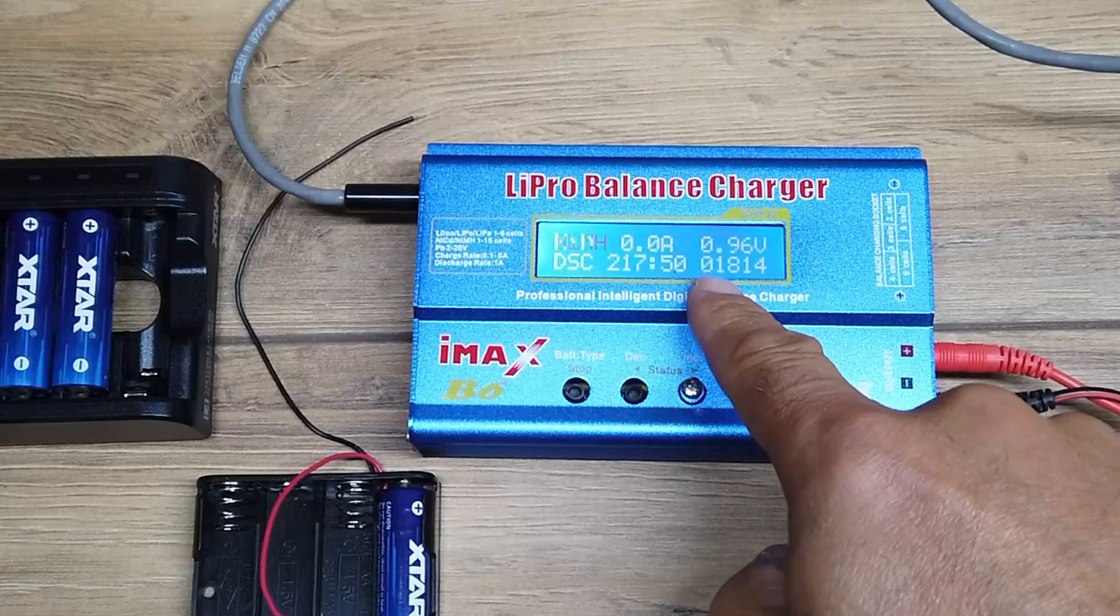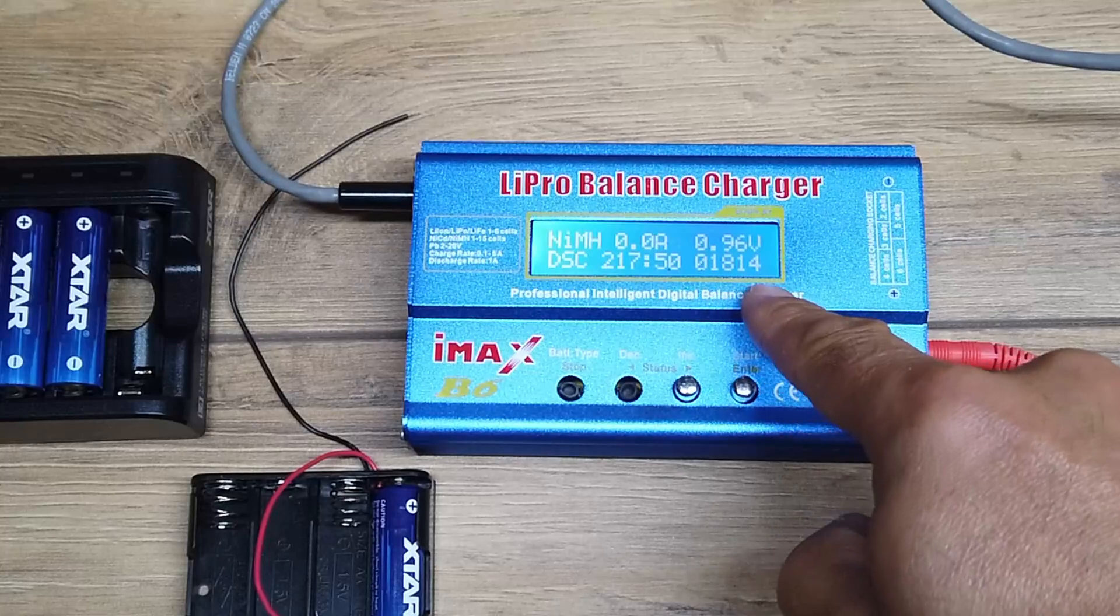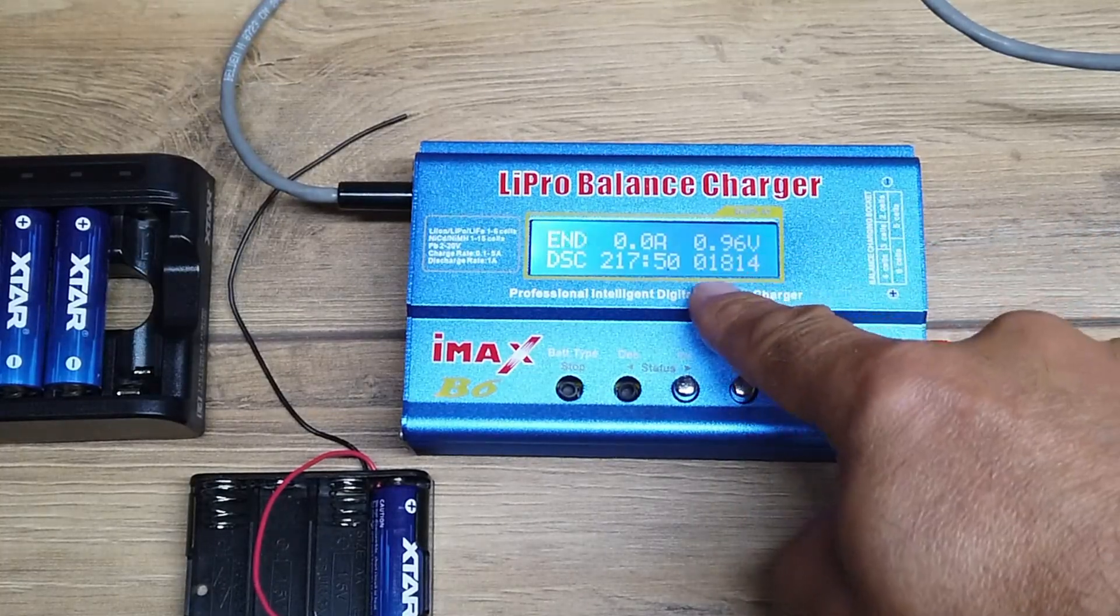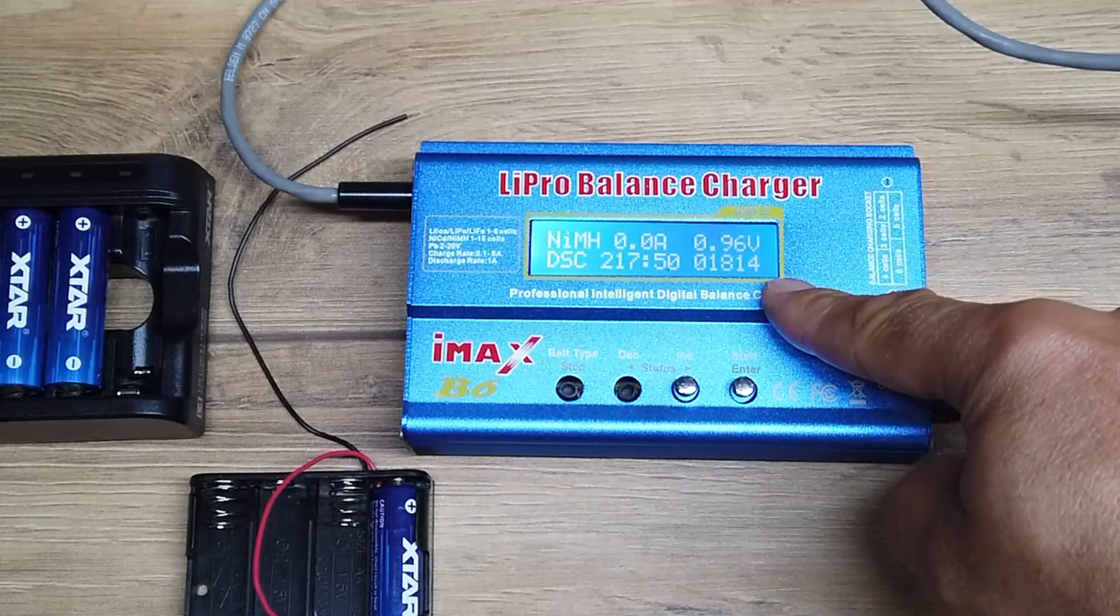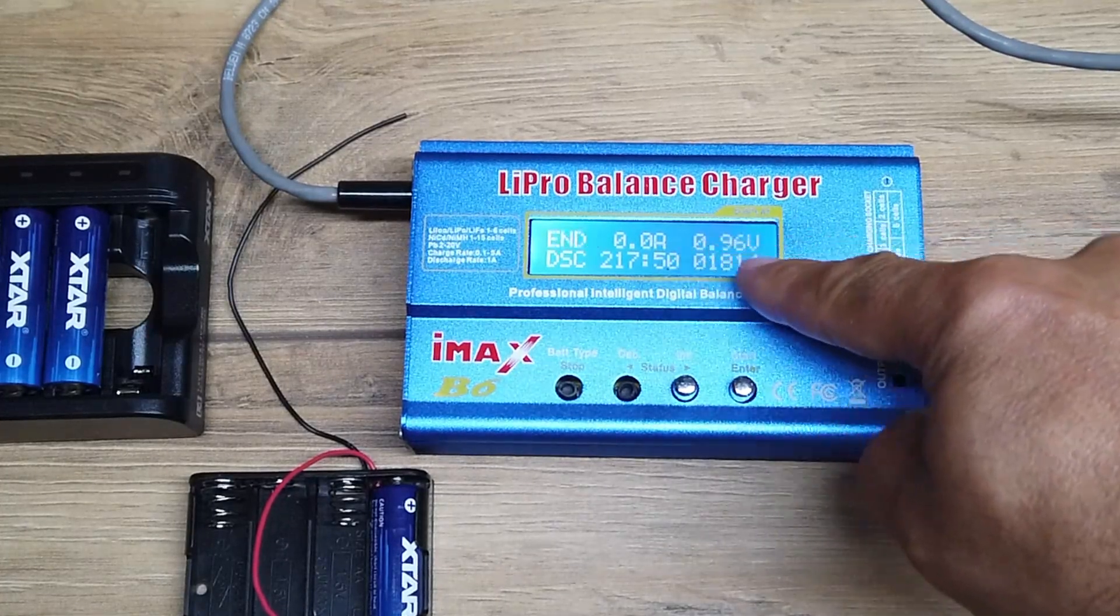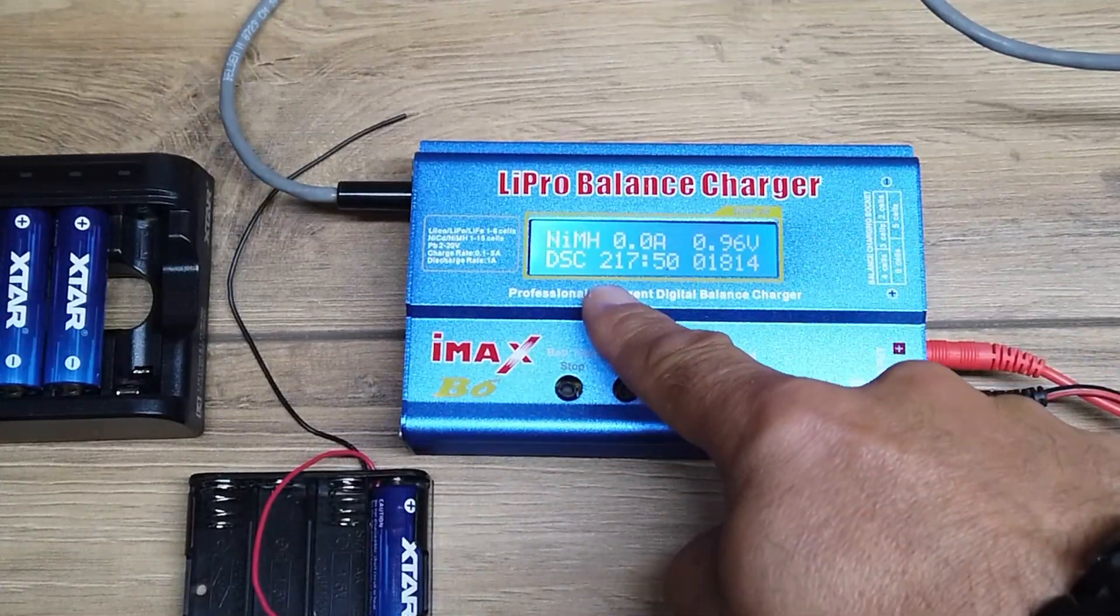Okay folks, this is what we've ended up with. This is the amount of current that's been drawn out of the battery, that 1.8 amp hours. That's actually pretty good going really for something this size, I'm quite impressed. The voltage dropped down to 0.96 of a volt at which point this decided that was the end of things.